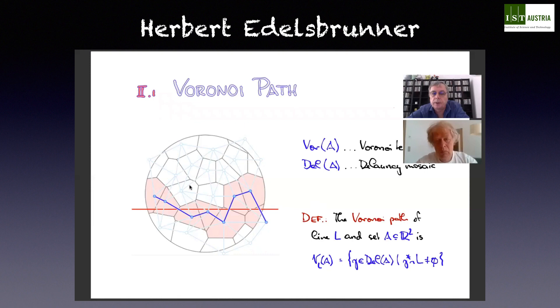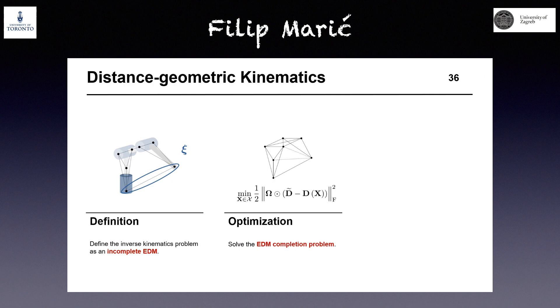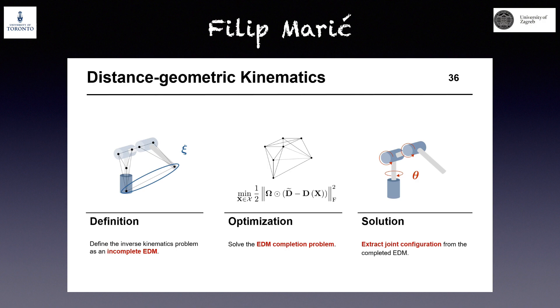Philip Maric: An optimization method is used to find a point set that corresponds to a feasible solution. And finally, the configuration vector is reconstructed from that point set.